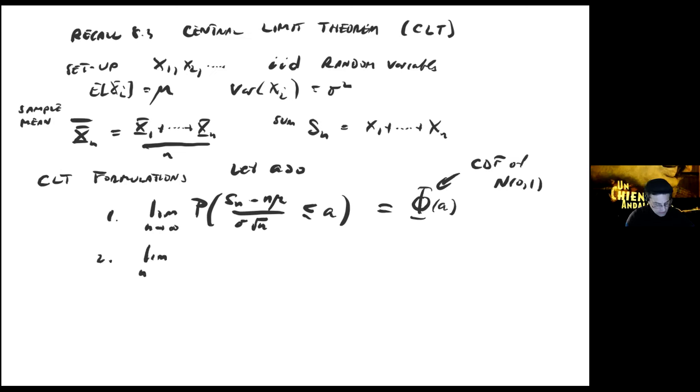The second formulation, which occurred in my last lecture, is if I take the limit as n goes to infinity of the normalized version of the sample mean. Now I subtract μ and divide by σ/√n, and I also get Φ(a).